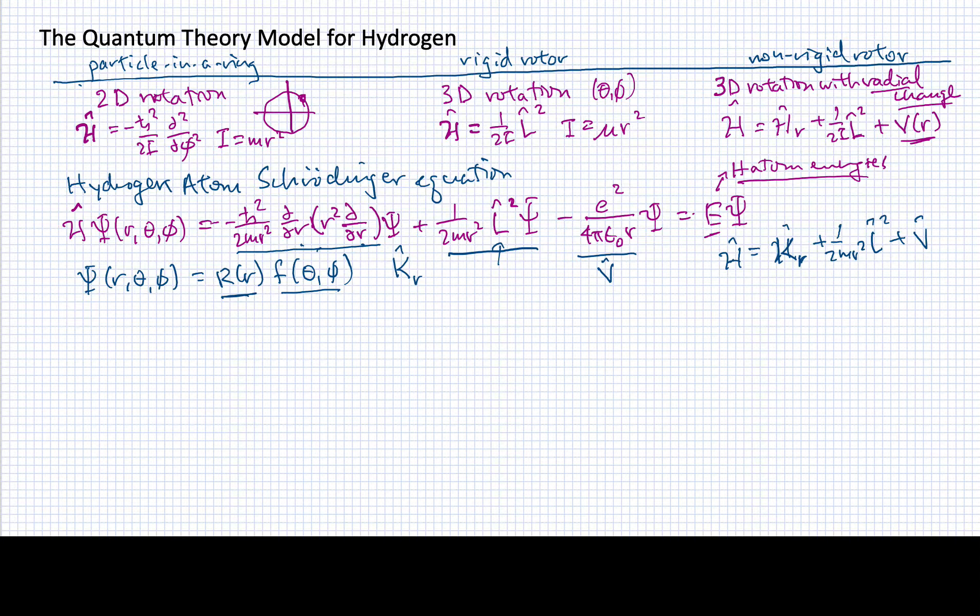When I write out this Hamiltonian equation in the case of a product of these two wave functions, I'll end up with something that looks like this.